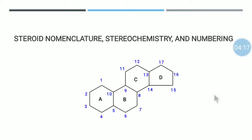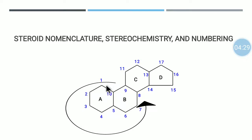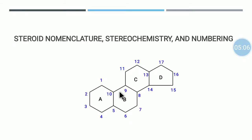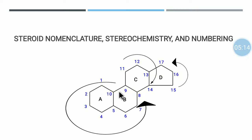Let us understand how we give numbering to this steroid skeleton. The numbering starts from ring A: 1, 2, 3, 4, 5; then covers ring B: 6, 7, 8, 9; then ring C: after 10 it is 11, 12, 13, 14; then wraps ring D. This is the way we give numbering to this steroid nucleus — starting from ring A, going to ring B, then jumping to ring C and then D.